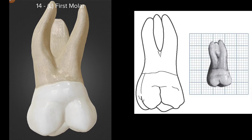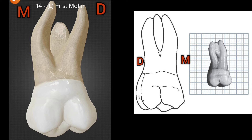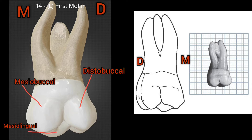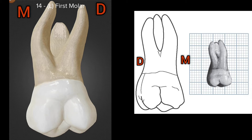From the buccal aspect, the crown is roughly trapezoid in shape. All four cusps are visible: the mesiobuccal cusp, the distobuccal cusp, the mesiolingual cusp, and a small amount of the distolingual cusp. The mesial outline of the crown is flat from the cervical margin to the contact area.